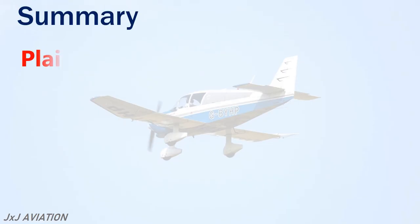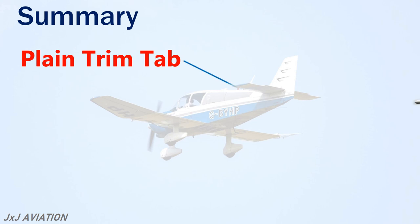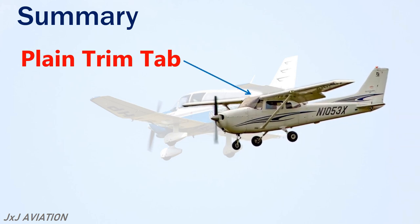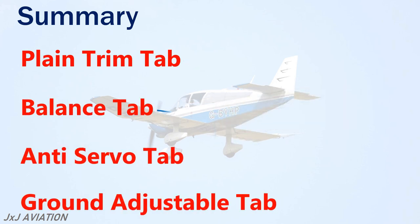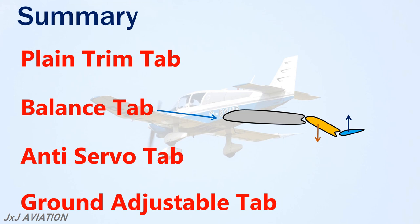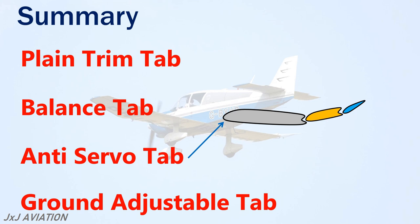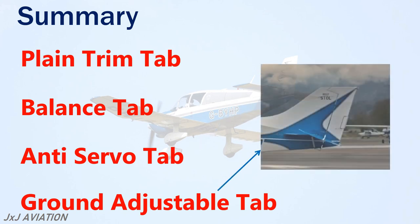So, if we consider a plain trim tab, it is used to trim an aircraft to maintain a particular aircraft attitude. A balance tab assists in deflecting a control surface by moving in the opposite direction. An anti-servo tab moves in the same direction as the control surface to increase the feel on the control stick. The ground adjustable tab is installed on the rudder and can be adjusted only on the ground to prevent the aircraft from yawing towards the left or the right.